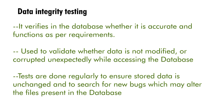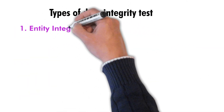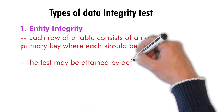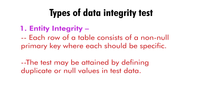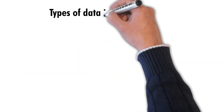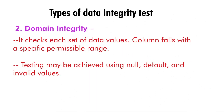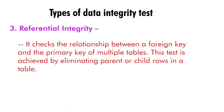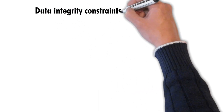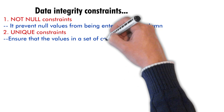There are three types of data integrity tests. The first is entity integrity — each row of a table consists of a non-null primary key that must be unique, tested by inserting duplicate or null values. The second is domain integrity — each column falls within a specific permissible range, tested using null, default, and invalid values. The third is referential integrity — it checks the relationship between foreign key and primary key across multiple tables, tested by deleting parent or child rows.